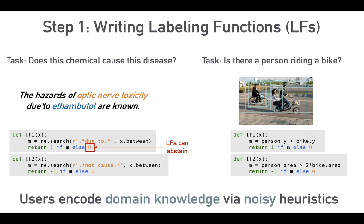We wrote labeling functions that were regex-based and looked at the text of these abstracts. For example: if the word 'due to' appears between the chemical name and the disease, then there is a causation. If the words 'not cause' appear, then there's no causation. These are two simple rules, but you can imagine writing more complex things that rely on external knowledge bases.